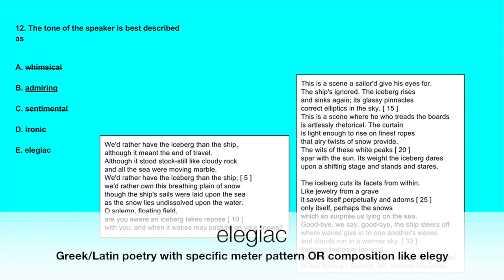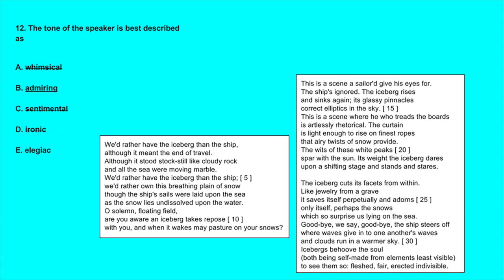E, elegiac - this would refer to poetry that is either following a very specific rhythmic pattern or poetry that is like an elegy. We're talking about tone here, not meter, and this poem is not like an elegy or something written for the dead. This answer is incorrect, and that leaves us with B, admiring, as the best response.